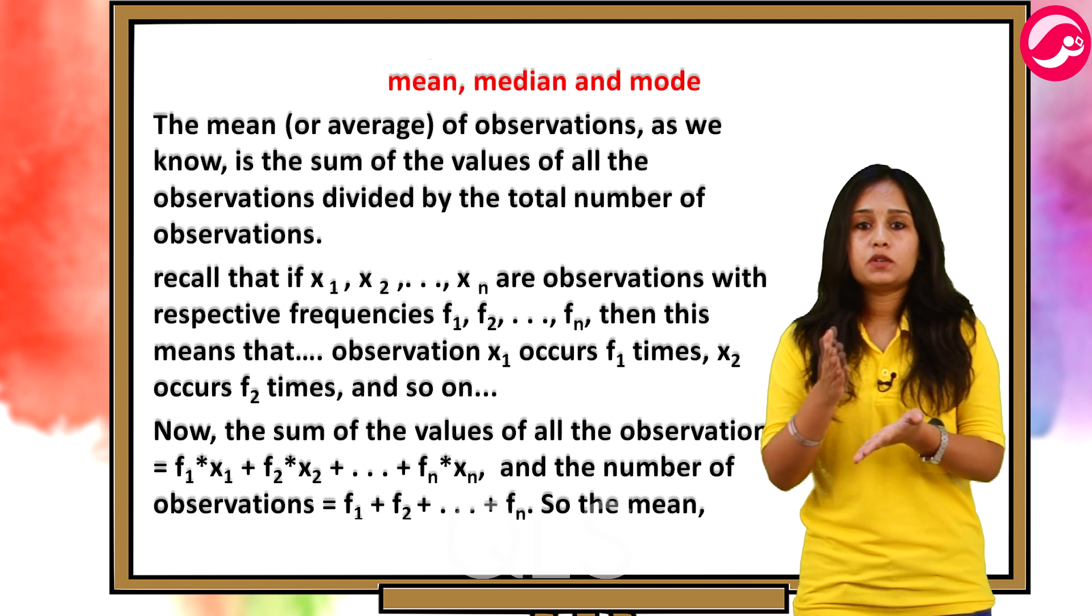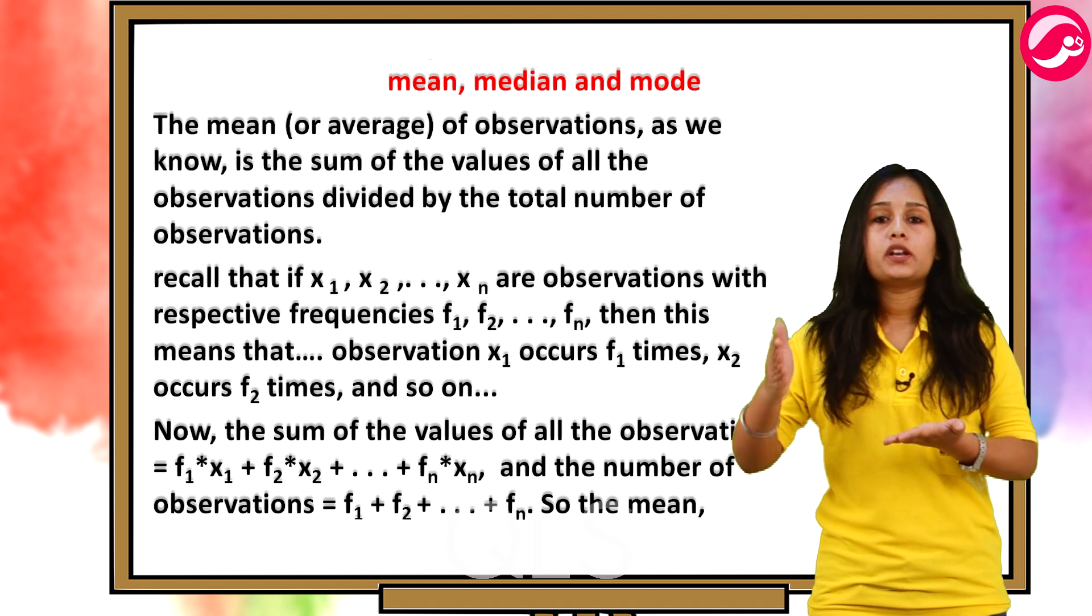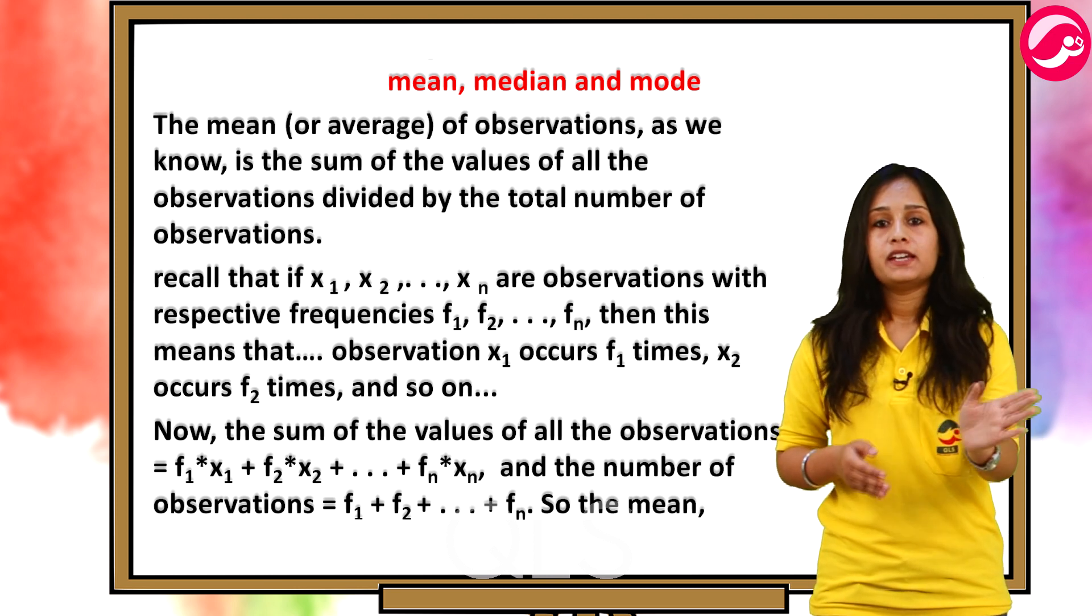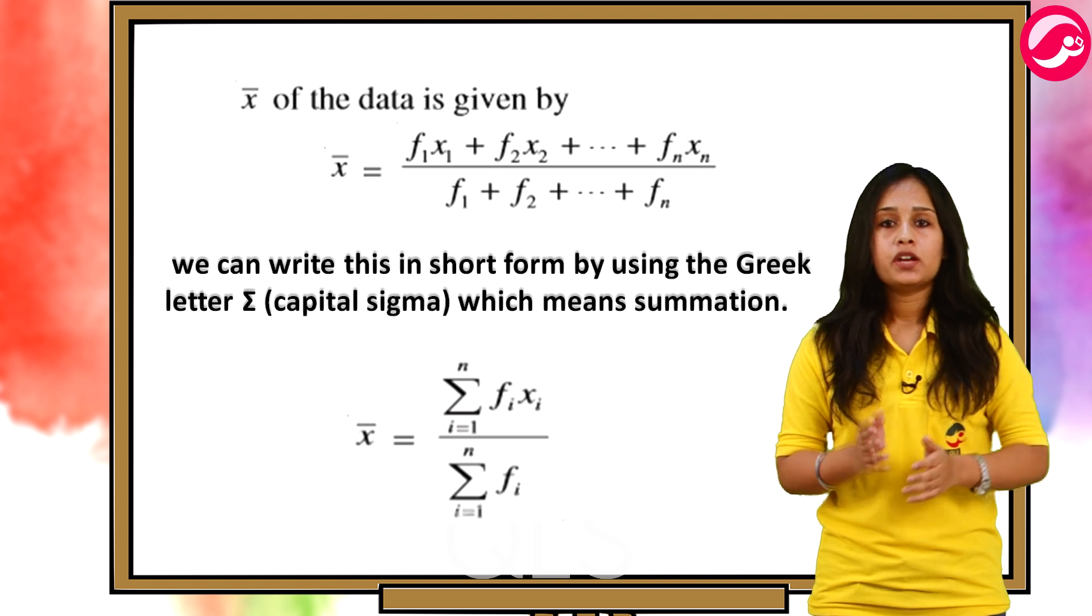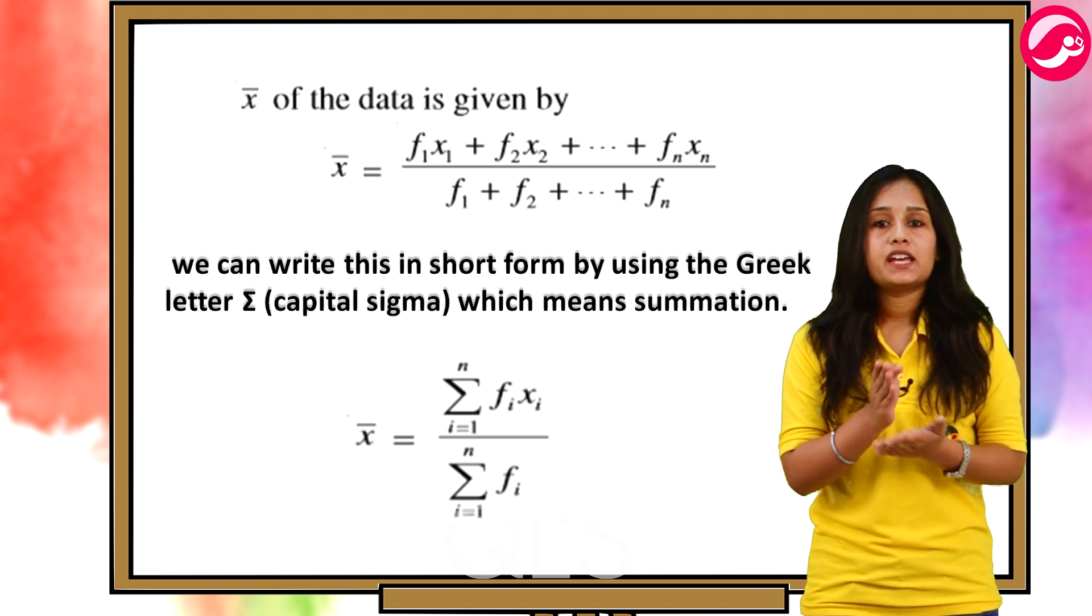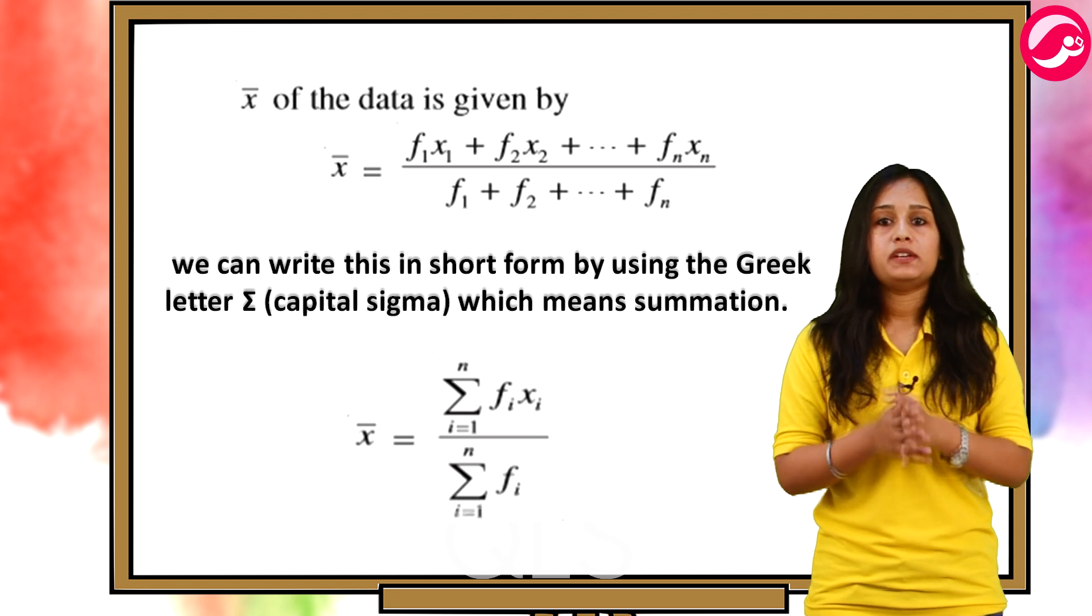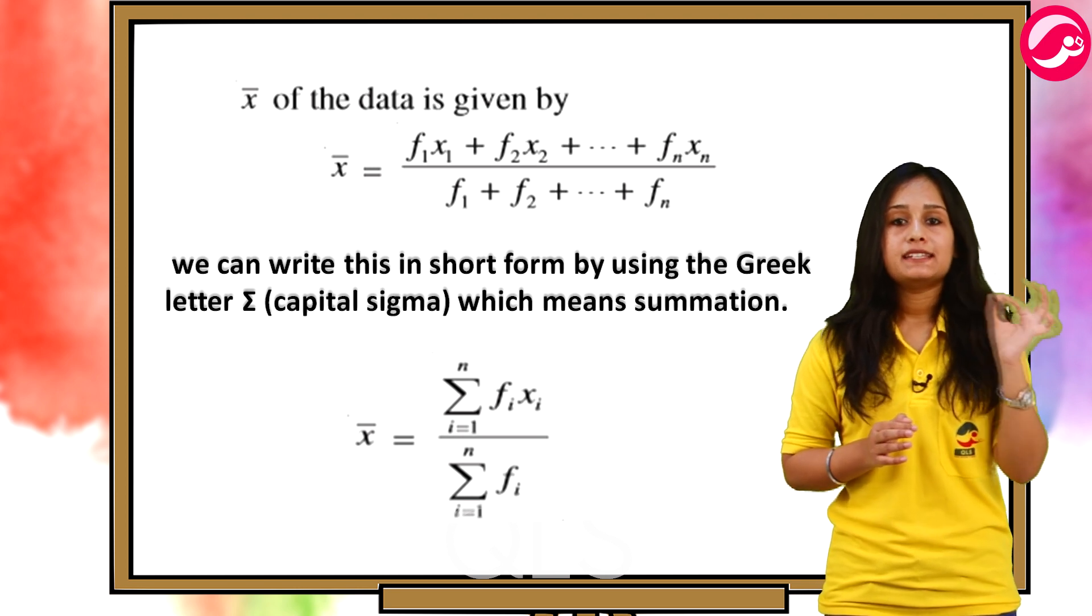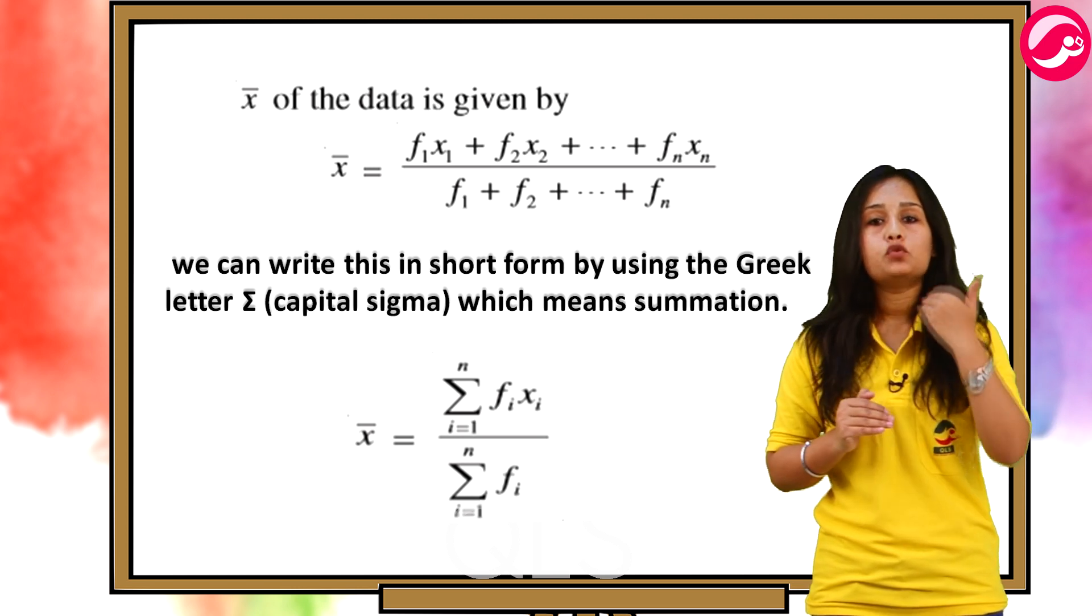Now, the sum of the values of all the observations will be equal to f1 into x1 plus f2 into x2 plus f3 into x3 and so on up to fn into xn and the number of observations will be equal to f1 plus f2 plus f3 up to fn. So, the mean x bar of the given data is given by x bar equal to f1 x1 plus f2 x2 plus f3 x3 up to fn xn divided by f1 plus f2 plus f3 up to fn. We can write this in short form by using the Greek letter sigma which means summation. So, x bar is equal to summation with limits i is equal to 1 to n and the summation is of fi xi divided by summation from limit i is equal to 1 to n into fi.